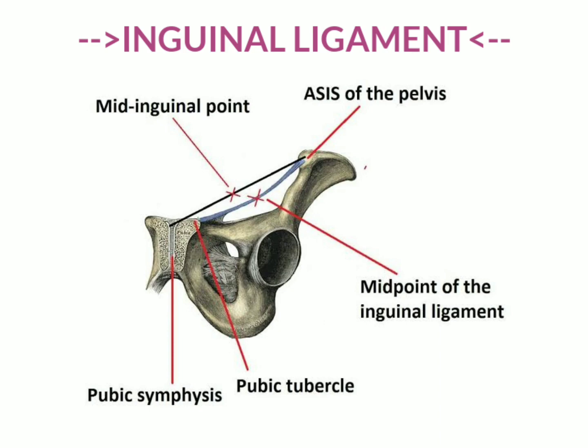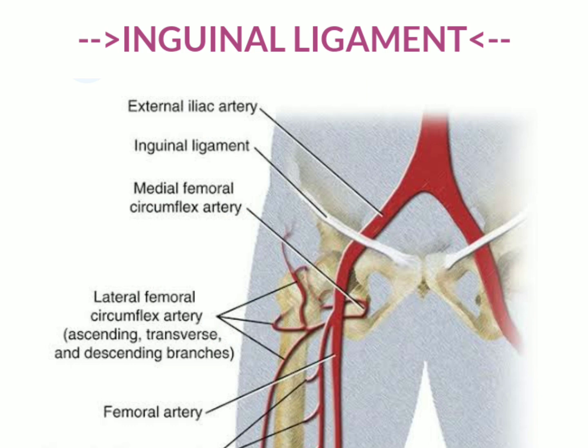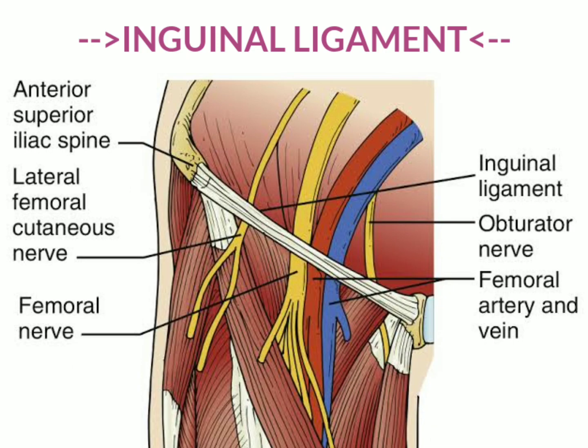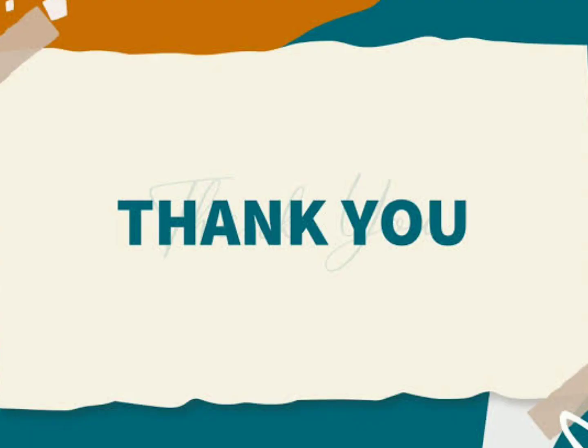The significance of the mid inguinal point is that it is a point of differentiation between the external iliac artery and the femoral artery — when the external iliac artery just crosses the mid inguinal point, it is called the femoral artery. The significance of the midpoint of the inguinal ligament is that it is an important landmark for the presence of the femoral nerve. Thank you.